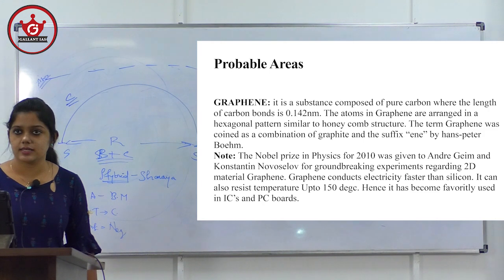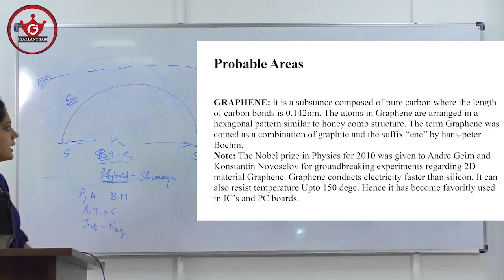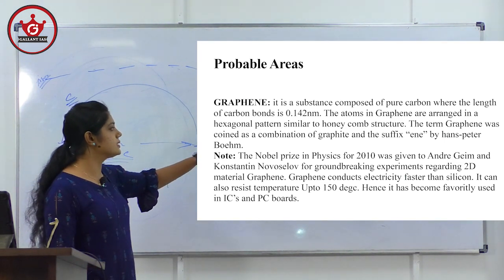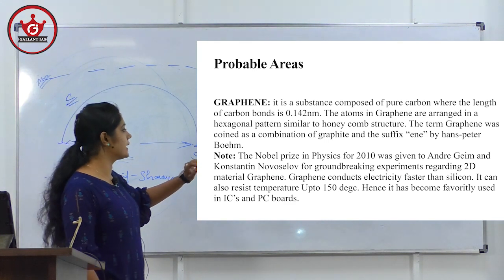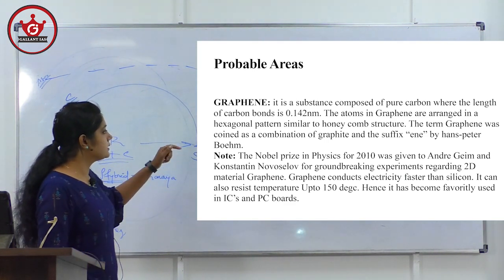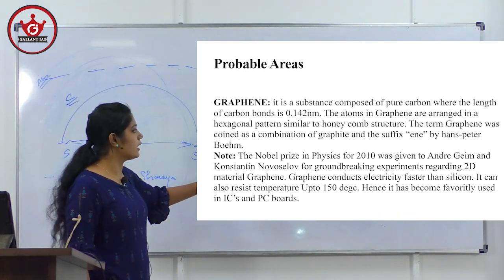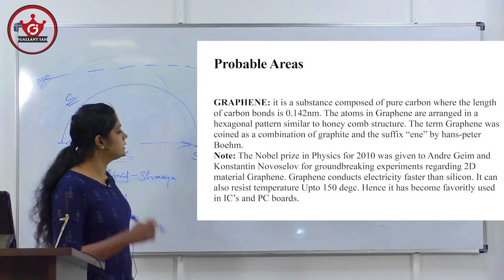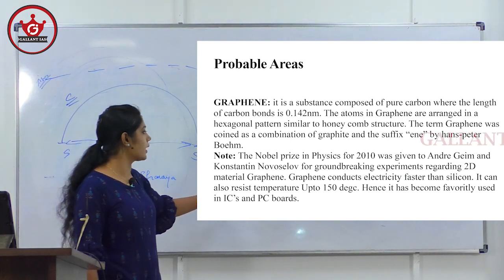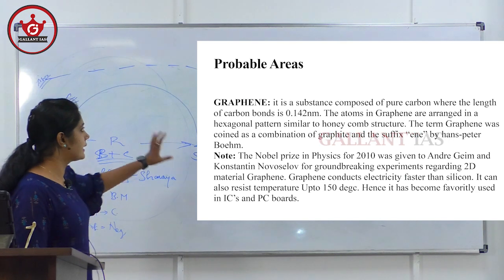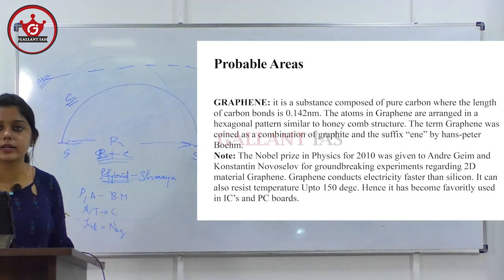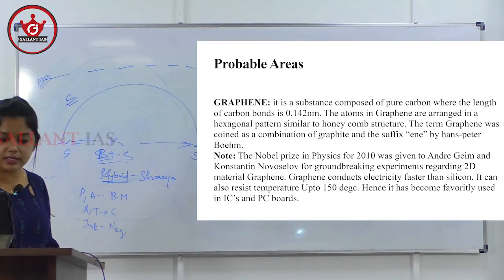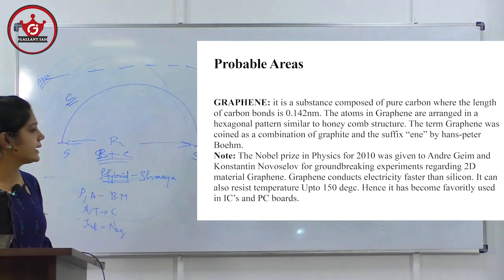In probable areas, graphene was once asked. Graphene is a substance composed of pure carbon where the carbon bond length is 0.142 nanometers. The atoms are arranged in a hexagonal pattern. The Nobel Prize in Physics for 2010 was given for graphene. Graphene conducts electricity faster than silicon, and it resists temperature up to 150 degrees Celsius — hence it is used for ICs and PC boards. Since it was asked once, high chances it can be repeated.